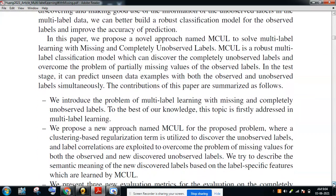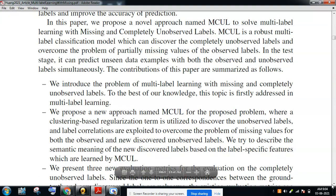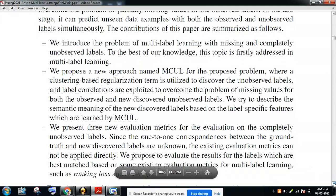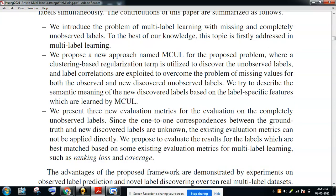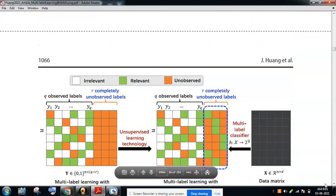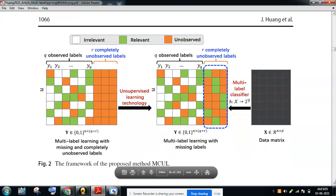They discuss the significance and contribution of this work. First, they introduced the problem of multi-label learning with missing and completely unobserved labels — and note that this topic is firstly addressed in multi-label learning, to the best of their knowledge. Second, they gave a new approach called MCUL where a clustering-based regularization term is utilized to discover unlabeled data. Third, they presented new evaluation metrics for completely unobserved data, using ranking loss and coverage as criteria.